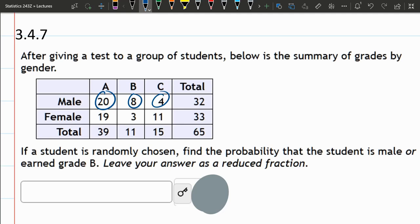Male students or earned a B. So there are two outcomes for Bs, but we've already counted one of these outcomes. So we only need to count the female B students here. And these are all the favorables. So we can add these up. 20 plus 8 plus 4 plus 3. You can put them all over 65.